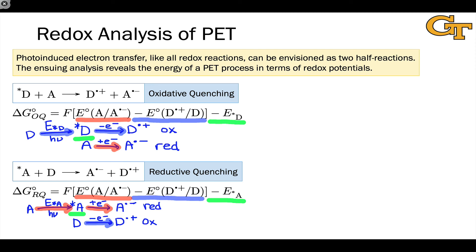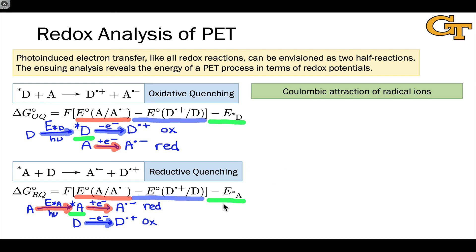Compared to general chemistry electrochemistry, this is essentially the same analysis with the exception of the excitation energy terms, which provide an energy boost for the electron transfer process. But there is one additional wrinkle: we've gone from neutral reactants to charged products in both cases. The opposite charges attract one another, providing a Coulombic driving force for electron transfer that is absent on the reactant side. This Coulombic attraction term can be added as a negative term to get a more accurate picture of the free energy change.